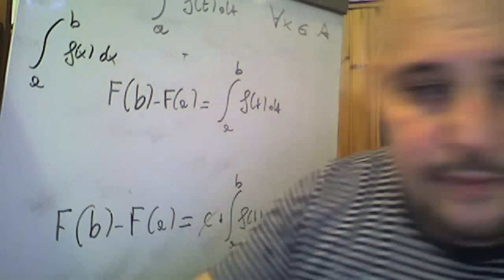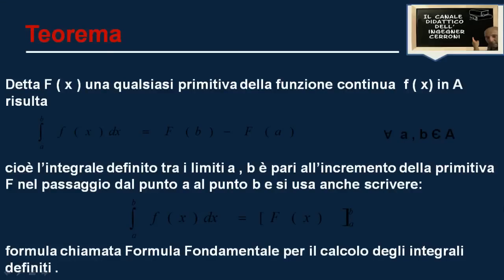Enunciamo dunque questo teorema, che ci fa vedere una serie di formule importanti. Il teorema afferma che: detta F grande di x una qualsiasi primitiva della funzione continua f piccolo di x in A nell'intervallo A, risulta che l'integrale fra a e b di f di x dx è pari a F grande di b meno F grande di a, dove a e b sono due punti appartenenti all'intervallo A. In pratica l'integrale definito tra i limiti inferiore a e superiore b è pari all'incremento della primitiva F nel passaggio dal punto a al punto b. Si usa anche scrivere l'integrale tra a e b di f di x dx è pari a F grande di x compresa fra a e b — formula chiamata formula fondamentale per il calcolo degli integrali definiti.